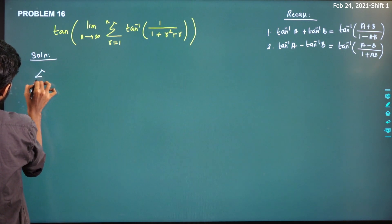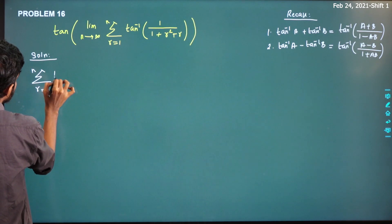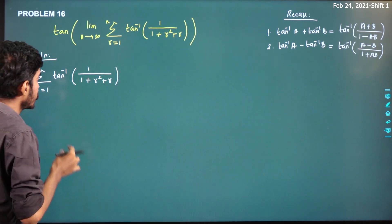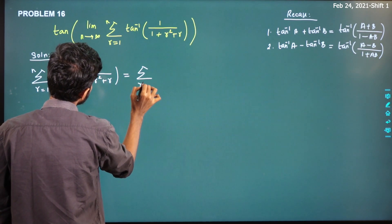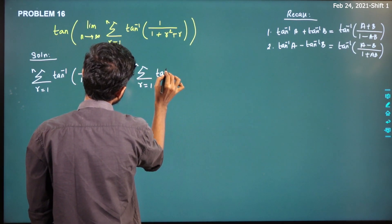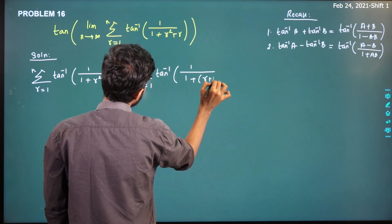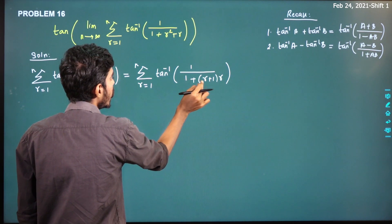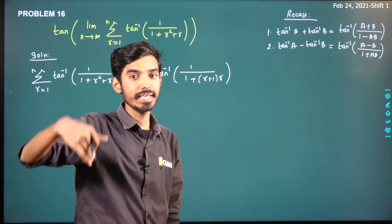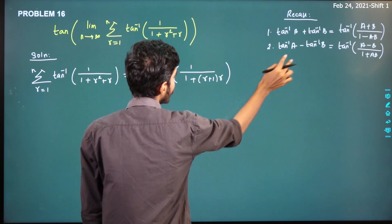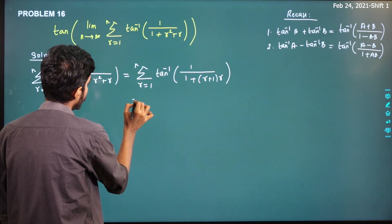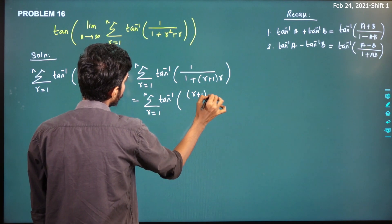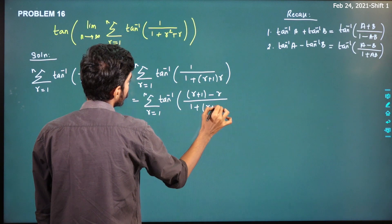So we will take this part: summation r from 1 to n of tan inverse of 1 divided by 1 plus r squared plus r. This is equal to summation r from 1 to n of tan inverse of 1 divided by 1 plus r(r plus 1). So this equals summation r from 1 to n of tan inverse of (r plus 1 minus r) divided by 1 plus r(r plus 1).